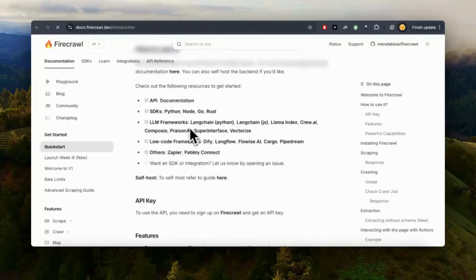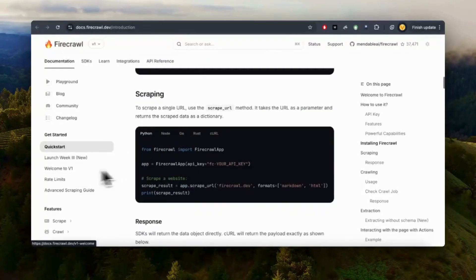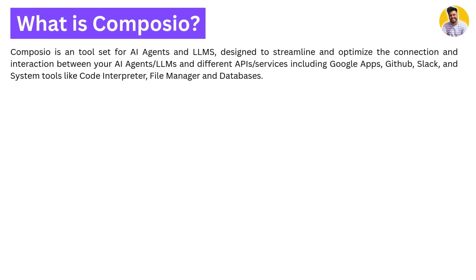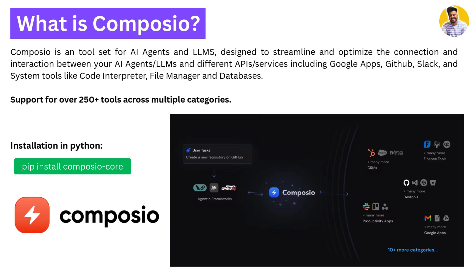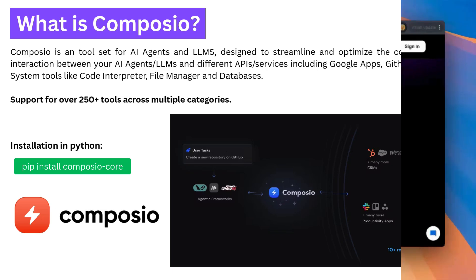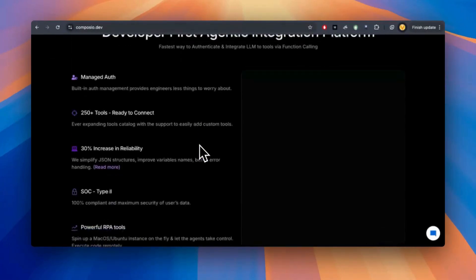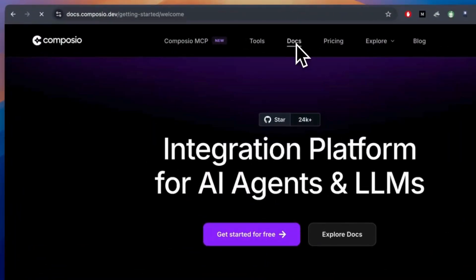Here is the overview of the Firecrawl website and its documentation — link is in the description for you to use. Then we have Composio AI, which is a toolset for AI agents and LLMs designed to streamline and optimize the connection and interaction between AI agents and different API services, including Google Apps, GitHub, Slack, and system tools like code interpreter, file management, or database management. It has more than 250 plus tools available on its website. You can install it using pip install composio-core.